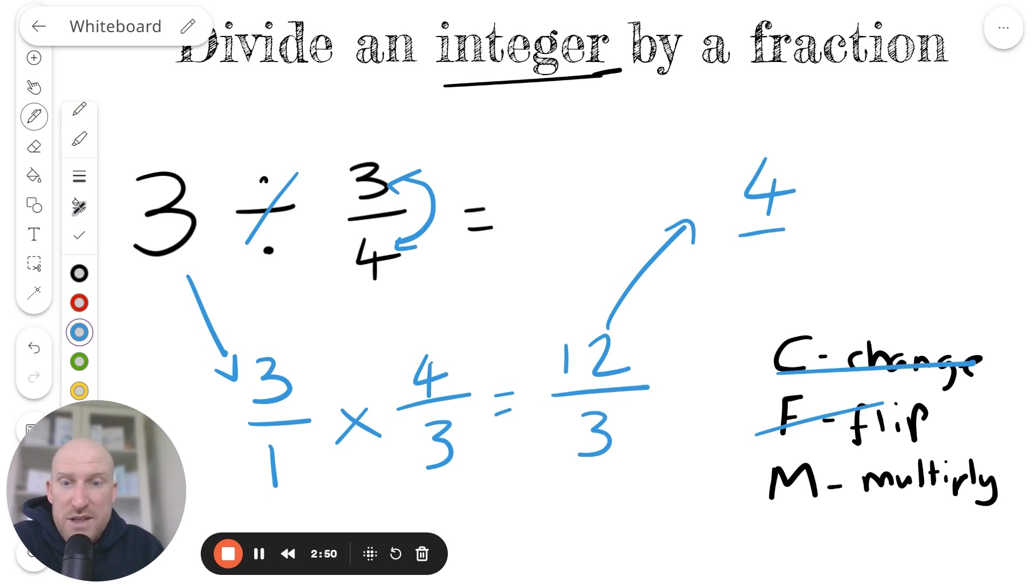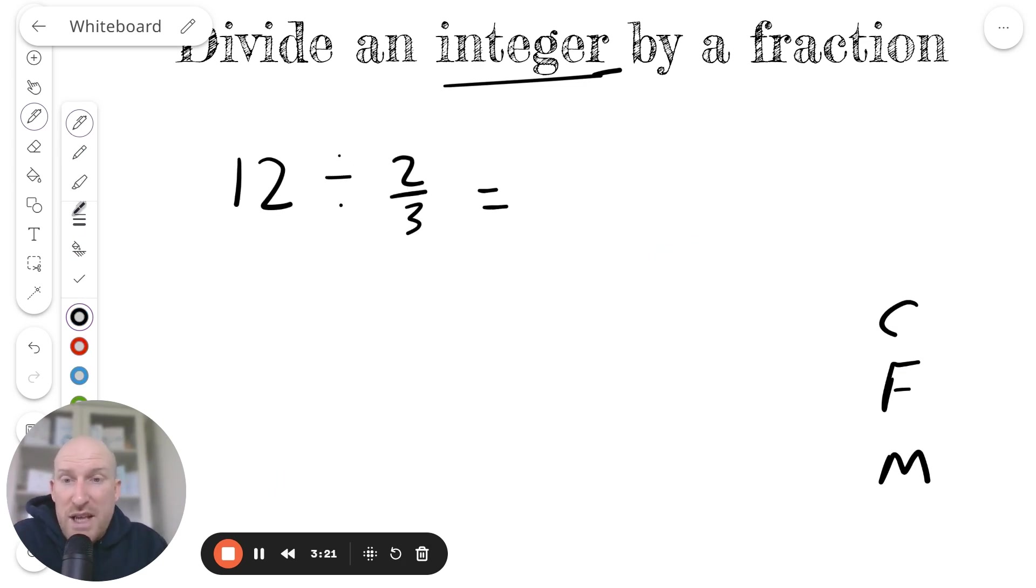Let's do another example. In this second and final example, we have 12 divided by 2 thirds. The integer in this question is the 12, and the fraction is the 2 thirds.